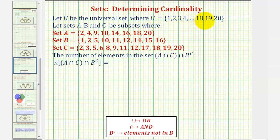We're given the universal set contains the whole numbers one through 20, and sets A, B, and C are subsets of U. We want to determine the number of elements in the set A intersect C intersect B complement.